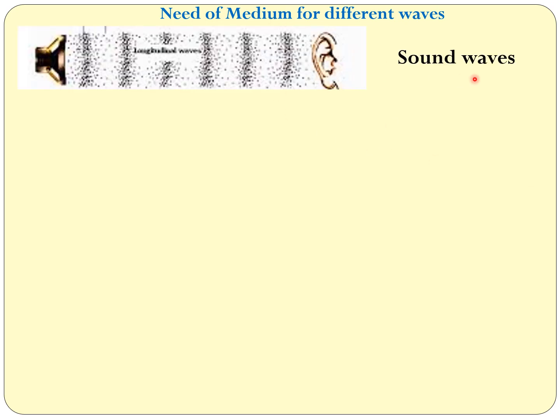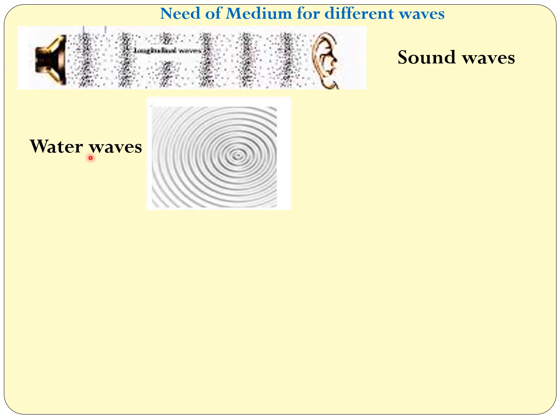For different waves, we need a medium for travelling. For sound waves, we need some air or gas molecules. For water waves, we need water to move for the propagation.